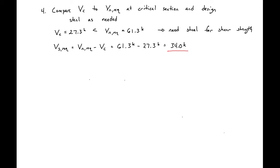We next assume a bar diameter and number of bars for our shear reinforcement. We'll assume number three bars with two legs. AV = 2 × 0.11 in² = 0.22 in². It's also acceptable to use number four or number five bars; typically we don't use shear reinforcement larger than a number five bar due to maximum spacing limits.